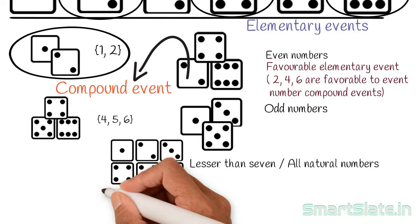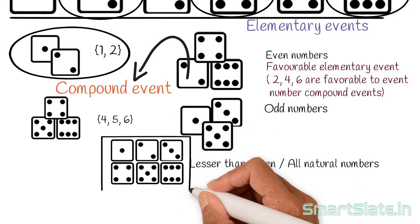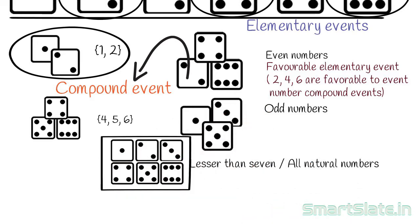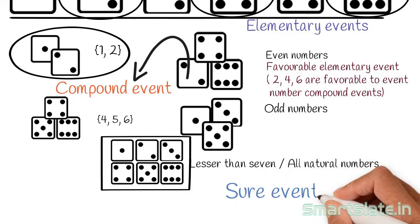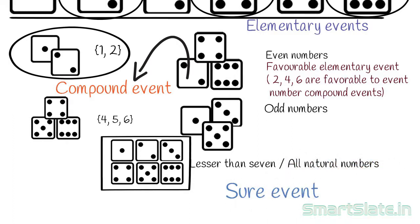Consider another event: getting natural numbers. This event is called a sure event or certain event, because the event always occurs — all outcomes of throwing a die satisfy the condition of being a natural number. Getting a 0 is also an event, but this is an impossible event. No matter how many times you throw the die, you will always get a number from 1 to 6 and will never get 0.